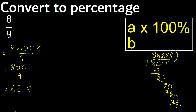Here, the digit is not less than 5 — it is greater — therefore here plus 1: 8 plus 1 is 9.